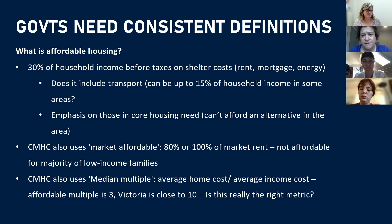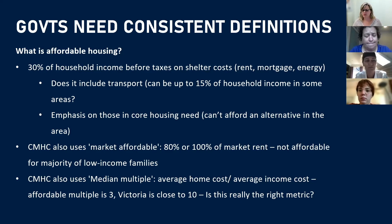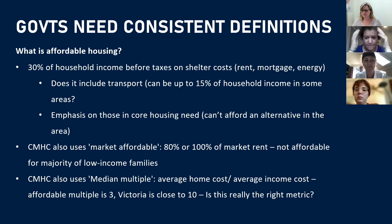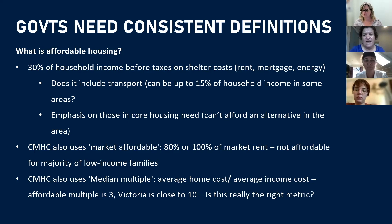The problem is that the CMHC uses about six different definitions of affordable housing in its programs. A commonly used definition is market affordable, which means 80 or sometimes 100% of market rent, but that's not affordable for the majority of low-income families that are currently paying 30, 50, 80% of their income on rent. The CMHC also uses an internationally used measure of housing affordability called the median multiple, which is the average home cost divided by the average income cost. In Victoria, that's about 10 times average home cost divided by average income cost. The traditional measure of housing affordability for home ownership is three. Is that really the right metric? Is that something that can shift in the short term? That's an open question, but certainly the point is that the CMHC uses lots of different definitions of affordable housing.